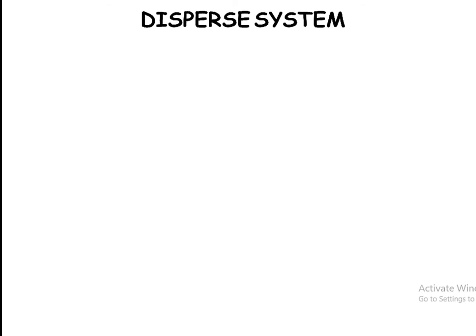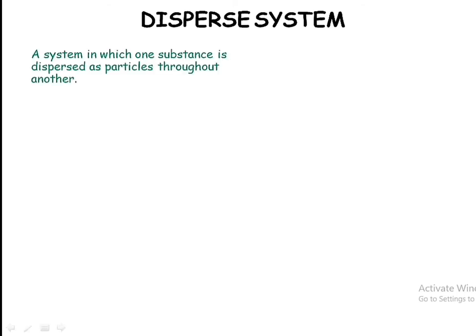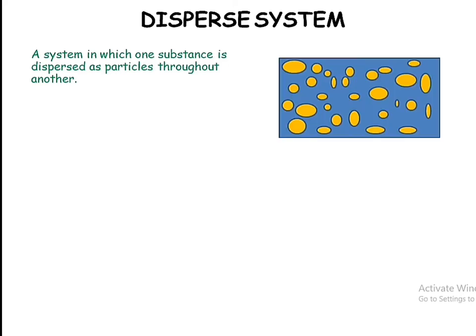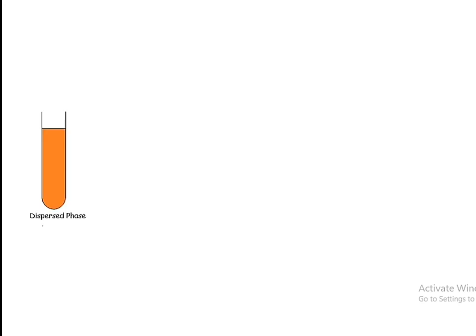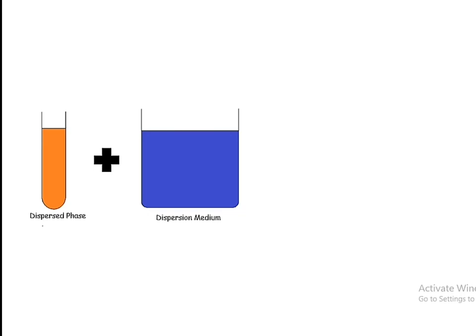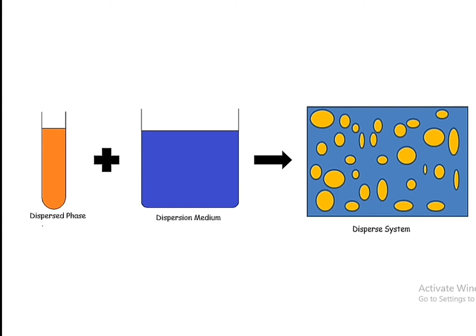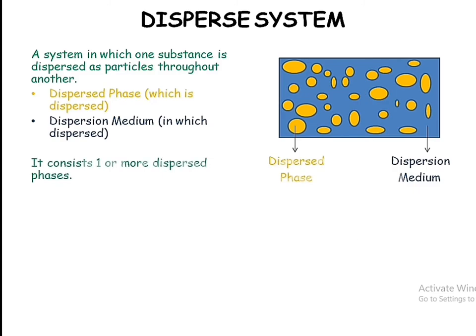Hello friends, today we will discuss about dispersed systems. A dispersed system is one in which one substance is dispersed as particles throughout another. It consists of two phases: the dispersed phase and the dispersion medium. The substance which is dispersed is the dispersed phase, and the medium in which it is dispersed is known as the dispersion medium.